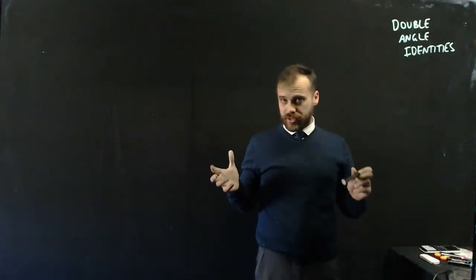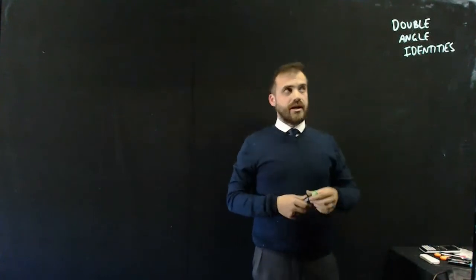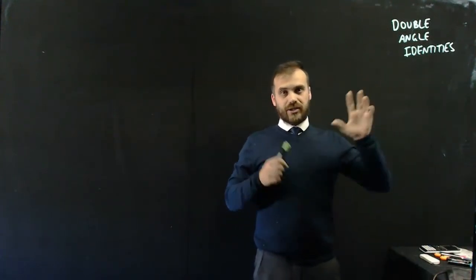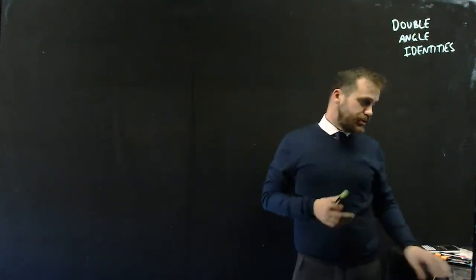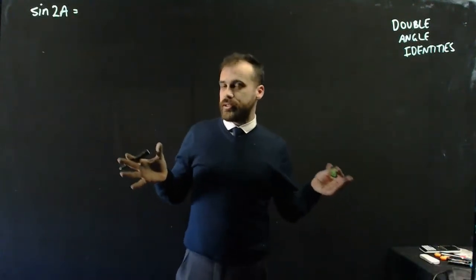Alright, so in this one we're looking at double angle identities. You already know about angle sum and angle difference identities. Double angle identities are just a very specific case of those. Let's prove our double angle identities.